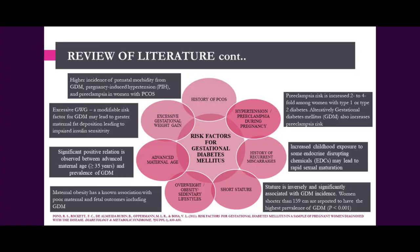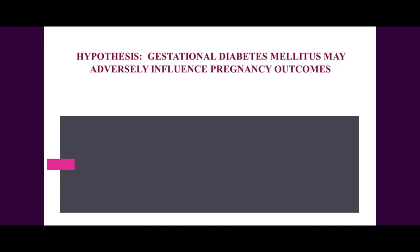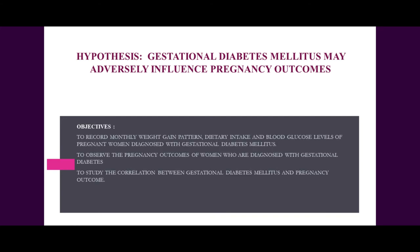Pre-eclampsia has also increased the risk of diabetes mellitus almost 2 to 4 fold. And if the woman is already having Type 1 diabetes, then the risk is even greater. Overall, many interplaying factors contribute to the development of gestational diabetes mellitus. The present study was taken up with the hypothesis that there is an adverse effect on pregnancy outcome when a woman is suffering from gestational diabetes mellitus. The objectives were: to record monthly weight gain pattern, dietary intake and blood glucose levels of pregnant women diagnosed with GDM; to observe pregnancy outcomes; and to study the correlation between GDM and pregnancy outcome.